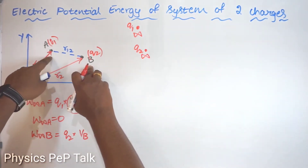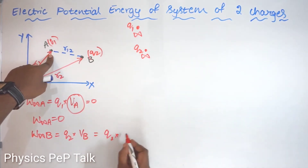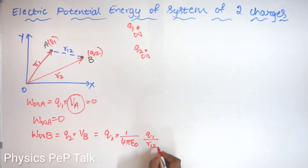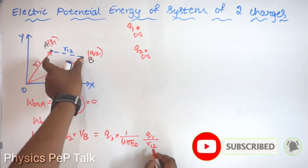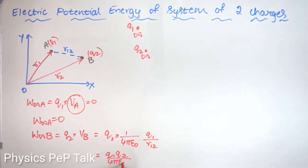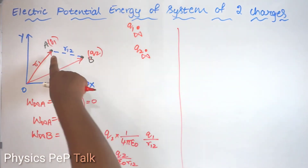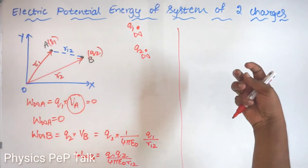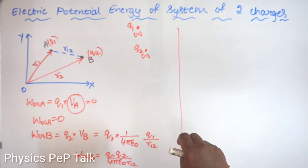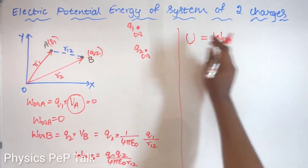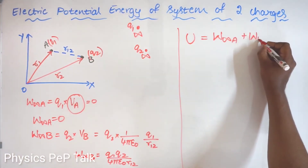The potential at point B can be determined because Q1 is already placed. So VB = 1 by 4 pi epsilon naught × Q1 by R12, where R12 is the distance of separation between A and B. Therefore, the work done in bringing Q2 from infinity to B equals Q1·Q2 by 4 pi epsilon naught R12. The amount of work done on each charge will be stored in that charge in the form of potential energy. So the total potential energy U equals the sum of the work done in bringing the charge from infinite distance to point A, plus the work done in bringing the charge from infinite distance to point B.